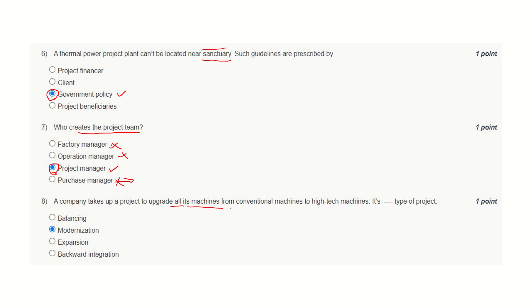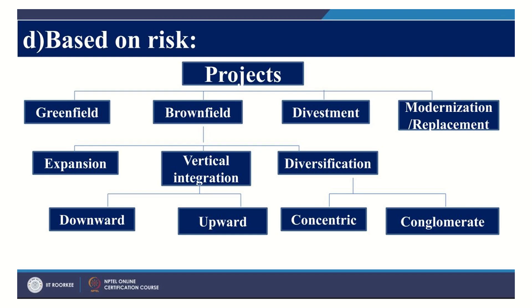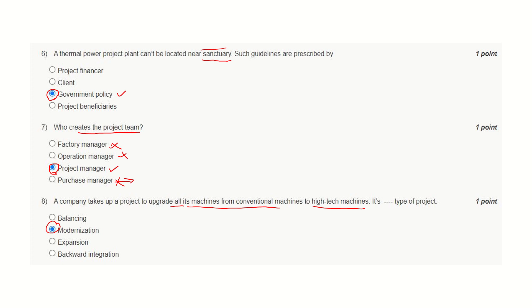A company upgrades all its machines from conventional machines to high-tech machines. For this, the correct answer is modernization. Types of projects based on risk include green field, brown field, divestment, and modernization. Modernization refers to replacement of all equipment and systems with new or high-tech ones. And hence this is the correct answer for question number eight.